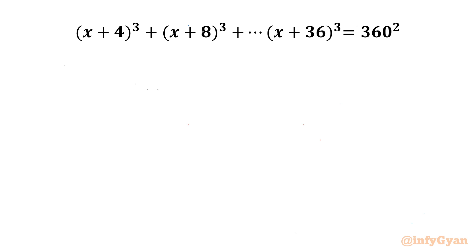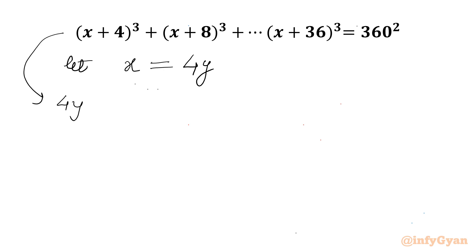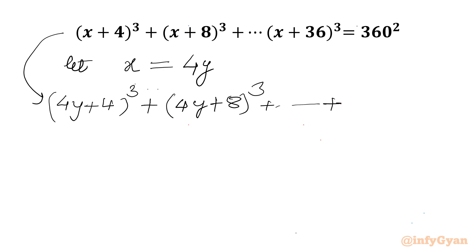Let's get started with our substitution. Let us consider x = 4y. So I will write the equation as (4y+4)³ for the first bracket, (4y+8)³ for the second bracket, and (4y+36)³ for the last bracket. This will be equal to 360².